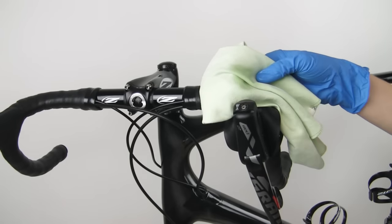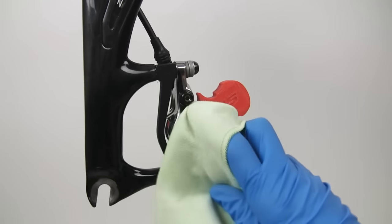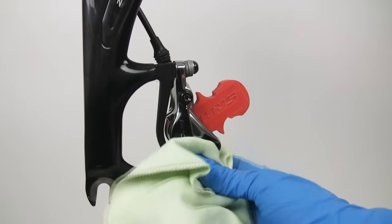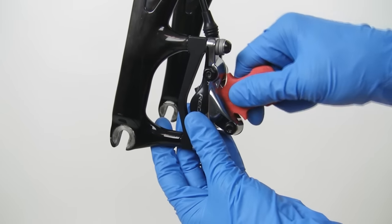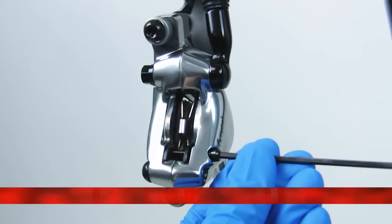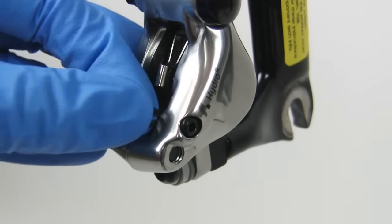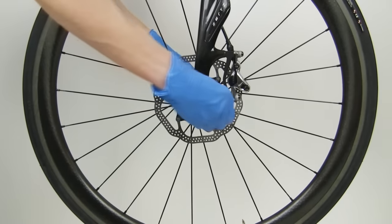Use isopropyl alcohol and a clean rag to remove any brake fluid from the lever and caliper. Make sure to clean around the lever bleed port screw. Remove the bleed block from the caliper and reinstall the brake pads. Reinstall the wheel.